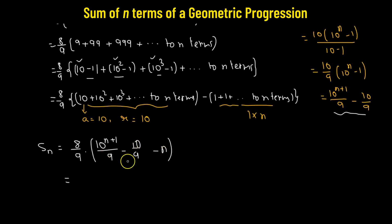Now we'll factor 1 over 9 from within the parentheses and combine it with 8 over 9 to get 8 divided by 9 times 9, which is 81. So 8 over 81, this will be multiplied by 10 raised to the power of n plus 1 minus 10 minus 9n. So this is our sum of the given series up to n number of terms.